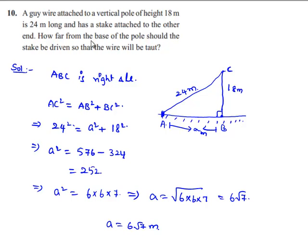So finally we got A is equal to 6 root 7 meters. So the distance of the stake from the base to make the wire taut is 6 root 7 meters.